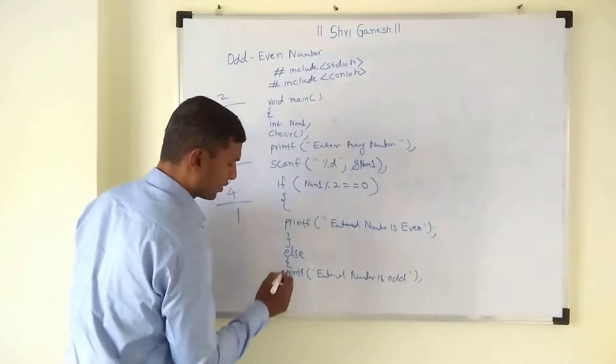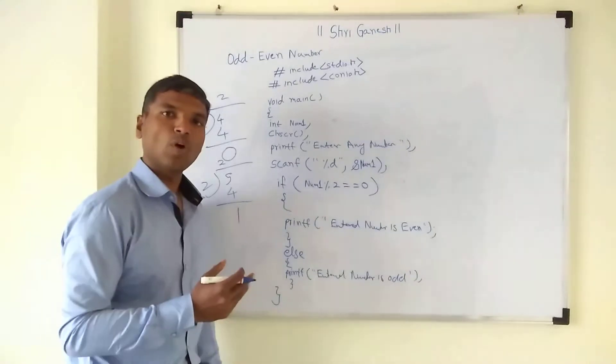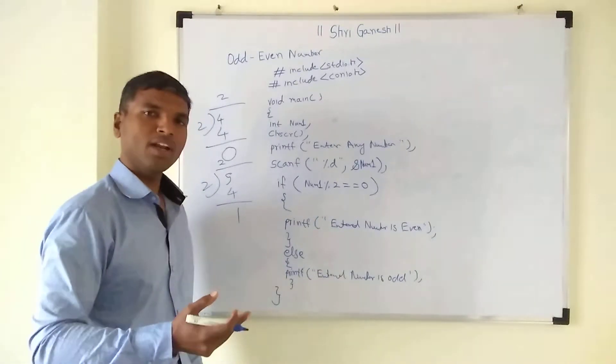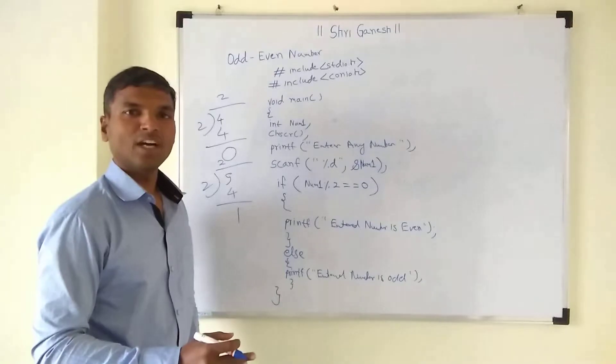Now we will close the main function. Then we will save this program in dot c extension and we will compile. If there is no error, we can run that and we will get the output.